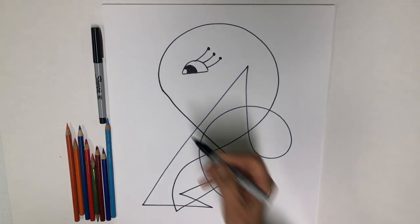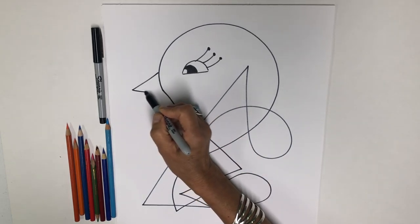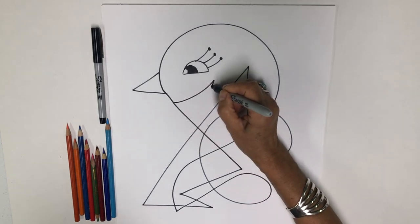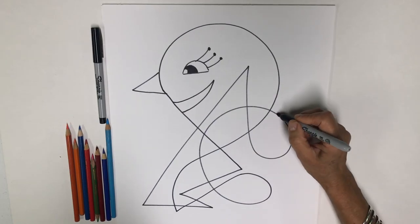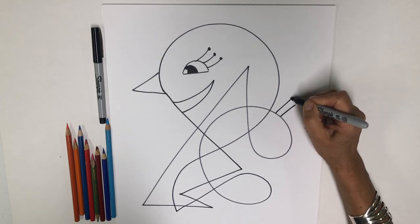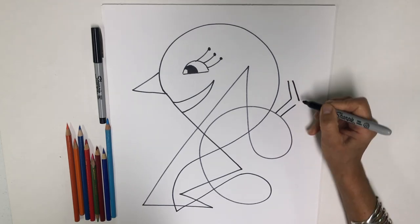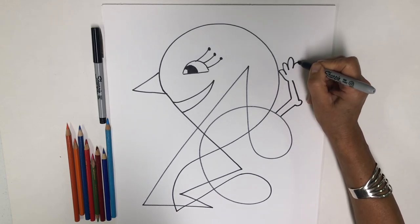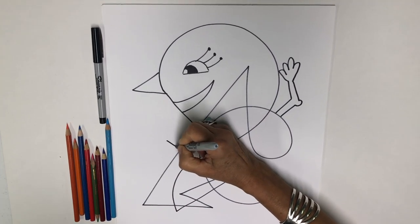And how about a nose or perhaps a beak? This looks more like a beak. And how about some arms? Perhaps I'll give him some movement. And he could be running.